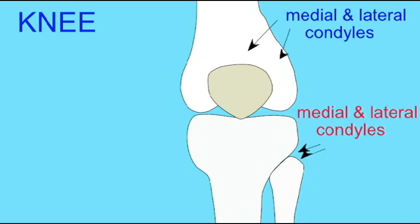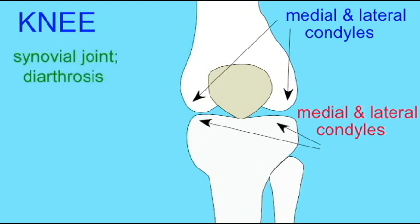It is a synovial joint and a diarthrosis, and a hinge joint, formed between the condyles of the femur and tibia, and also with the patella gliding along the patellar surface of the femur.